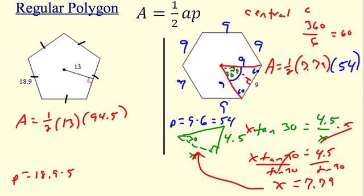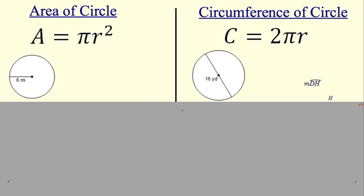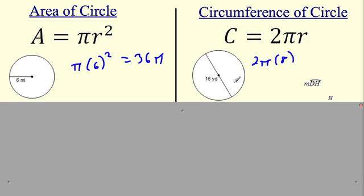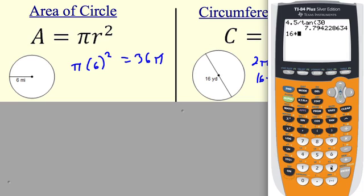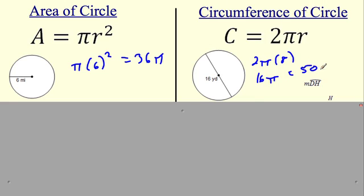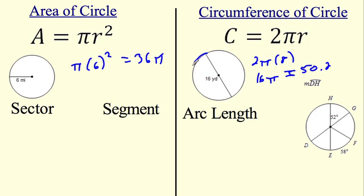Last two sections cover circles. Area of a circle is πr². For radius 6, that's 36π — leave it exact, or multiply out if they ask for the decimal. Circumference is 2πr. For radius 8, that's 16π, or approximately 50.24 yards — usually rounded to the tenth. Area is measured in square units; circumference is the distance walked around the circle.